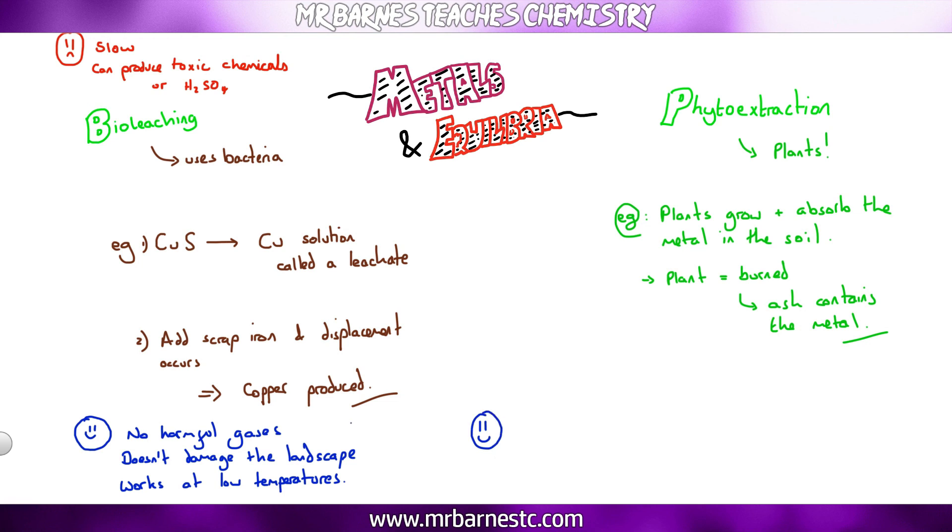Now the benefits of this: it doesn't produce harmful gases and it doesn't damage the landscape just like using bioleaching. But it can also get metals from contaminated soil, that's a massive benefit. However there are downsides again. It's also slow and it's weather dependent. If you haven't got the climate you can't grow the plants, if you can't grow the plants you can't get the metal out of the ground. And it can also be more expensive than using electrolysis at times, so you have to weigh up the benefits and the consequences of using either method.